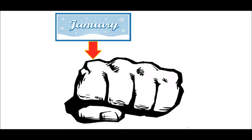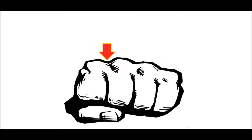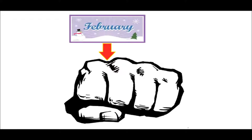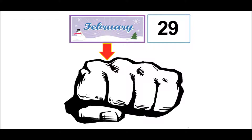You can begin from either side, but with this first knuckle, that's going to be January — and again, the knuckle is 31 days. Now we move over to the valley in between the knuckles, which is 30 days or less. Being February, we have 28 days, and during the leap year it's 29 days.